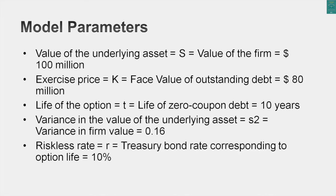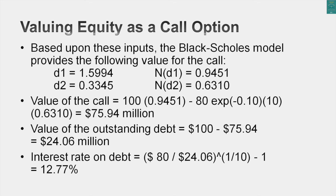For the variance, I square the 40% standard deviation to get 0.16. Plugging all inputs into the Black-Scholes model, the value of the call option — and therefore the equity — comes out to $75.94 million. The overall value of the company is $100 million, so subtracting the equity value gives a market value for the debt of $24.06 million. With those two numbers I can back into an interest rate of 12.77% on the bond, implying a default spread of 2.77%. With limited information, option pricing tells you both the equity value and the appropriate default spread.